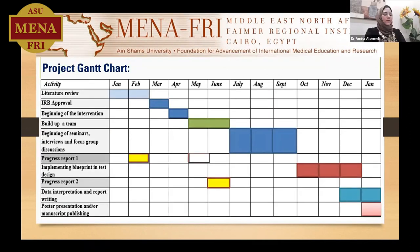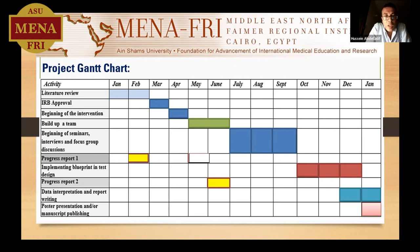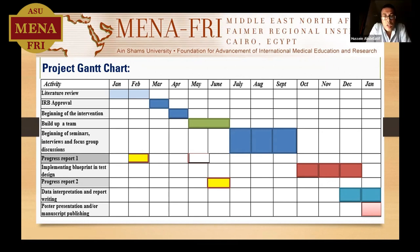The project began by reviewing the literature in January and February. I then applied for IRB approval in March, and in May and June I started the intervention by designing a test blueprint and building up a team. This was slightly delayed due to modifications in the college's learning schedule. I then began presenting seminars, interviews, and group discussions, held during July, August, and September.